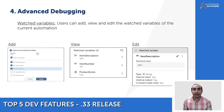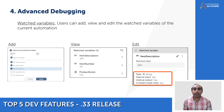Now let's talk about watched variables. Users can add, view, and edit the watched variables of the current automation during debugging. There's also a detailed view for these watched variables — it's like a quick cheat sheet that shows you all the properties of each variable: its type, its input, its output, and whether it's a constant or not.